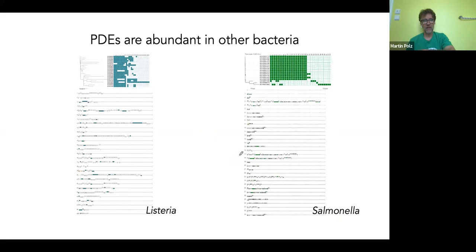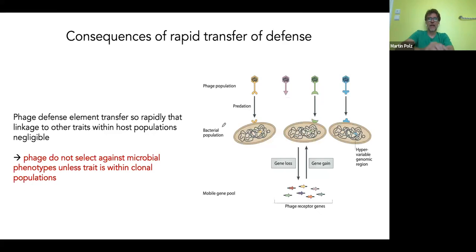We also looked at other bacteria — Listeria and Salmonella — and found essentially the same patterns. In some cases, phage defense genes are carried largely by prophages, but in most cases also by these phage defense elements. However, the analysis was a bit limited because you need collections of very closely related strains with closed genomes.